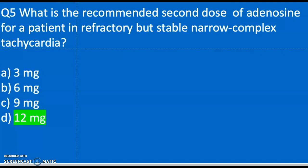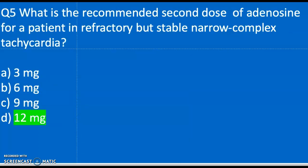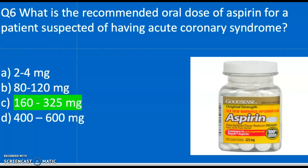Question six: What is the recommended oral dose of aspirin for a patient suspected of having acute coronary syndrome? A) 2 to 4 milligrams, B) 80 to 120 milligrams, C) 160 to 325 milligrams, D) 400 to 600 milligrams. The correct answer is C — 160 to 325 milligrams.